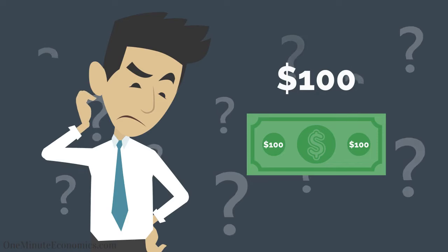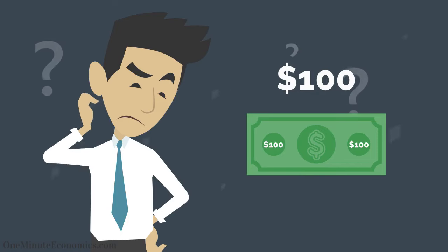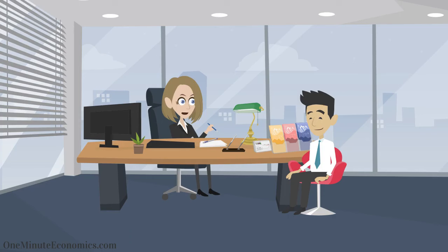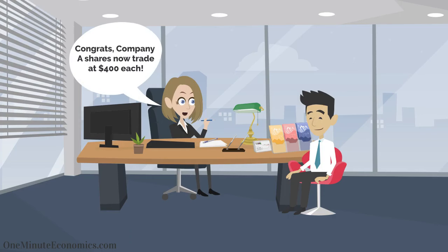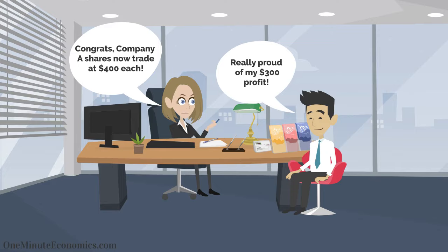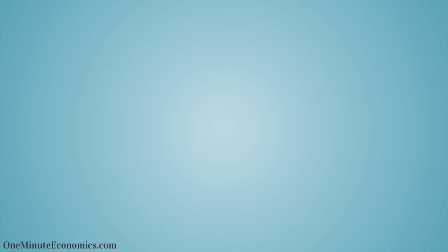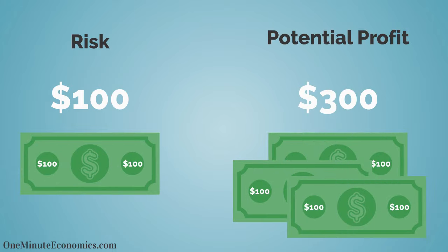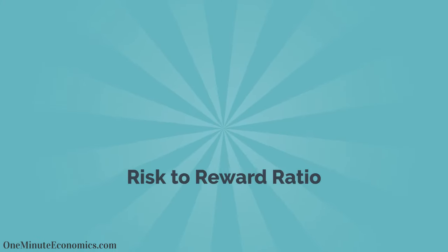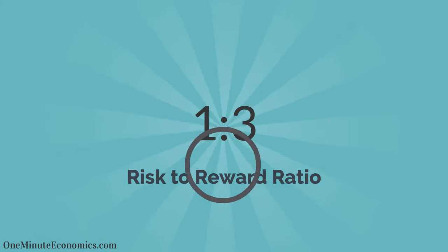In this case: one, you are risking $100, and two, if the share price does reach $400 and you sell, you are left with $300 after subtracting the $100 you paid for it. In other words, you are risking $100 for a potential profit of $300, or a risk-to-reward ratio of 1 to 3.